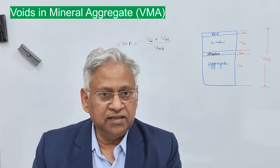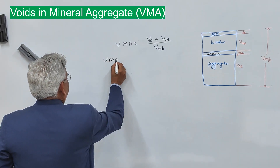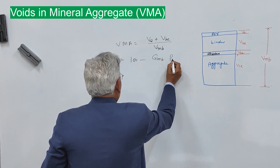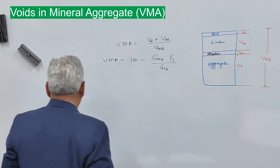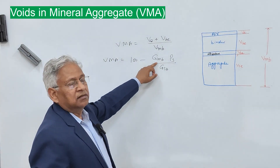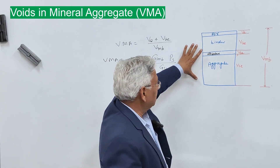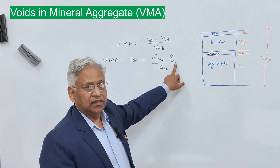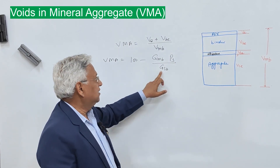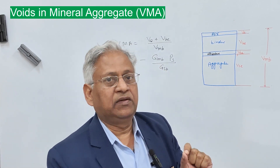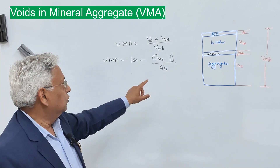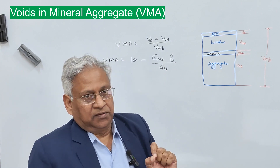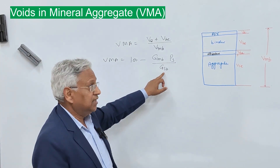More readily, VMA is calculated using this equation: VMA = 100 minus (GMB × Ps) / GSB. Here GMB is the bulk specific gravity of the mix, that is total weight divided by total bulk volume VMB. Ps is the percentage of stone aggregate by weight of total mix. GSB is the bulk specific gravity of aggregate. We use GSB because VMA does not consider the water-permeable voids in the aggregate, so it is important to use GSB and not GSE.